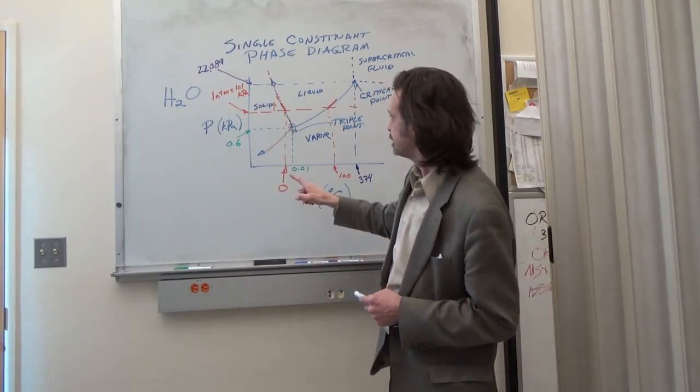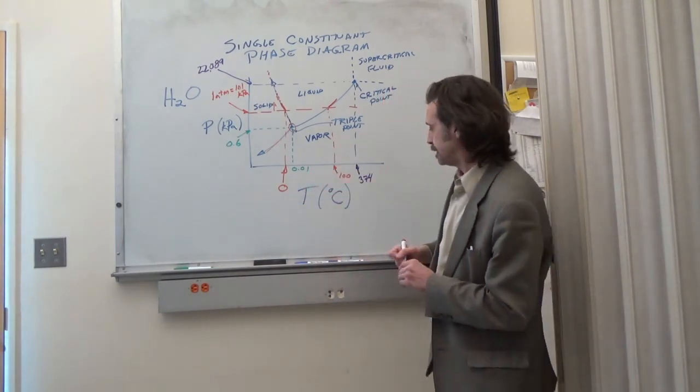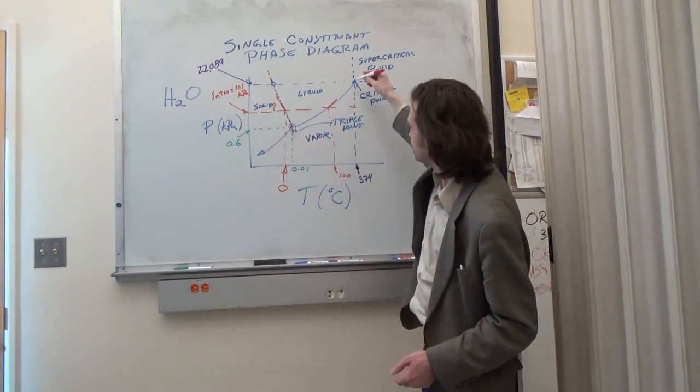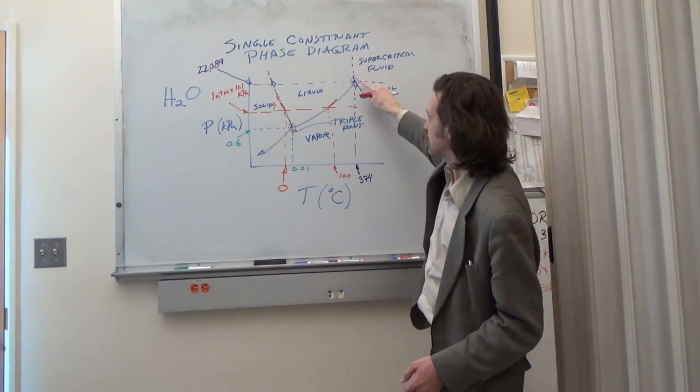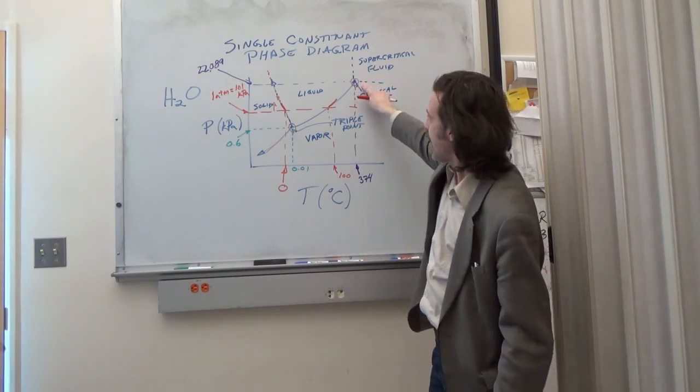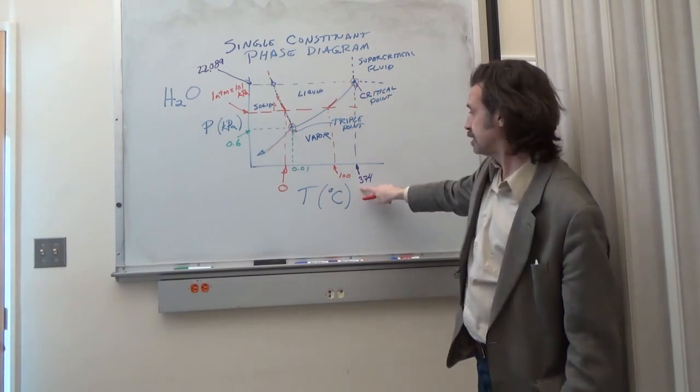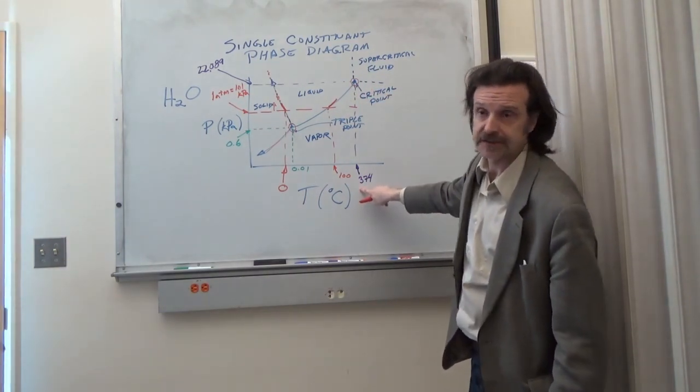And lastly I want to point out that there is also another type of point, a special point. So if that's a triple point, up here we have what is called a critical point. And that critical point in the case of water occurs at 374 Celsius.